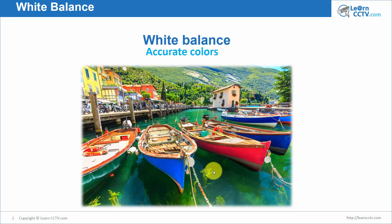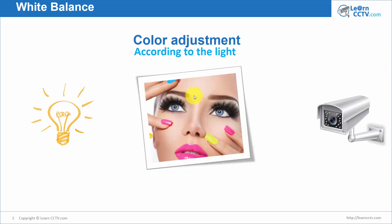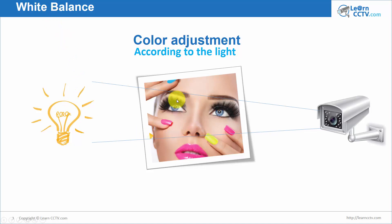Here's an image about color adjustment according to the light. Light passes through an object and hits the camera, and the image colors are determined by that light. If you adjust your white balance for one type of light and then change to a different light source without changing your camera configuration, the colors the camera captures will not be correct.